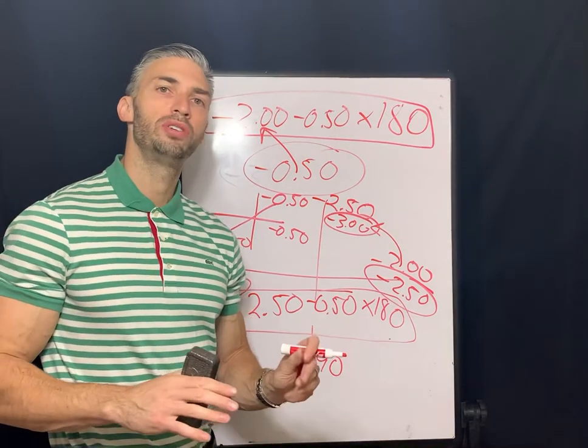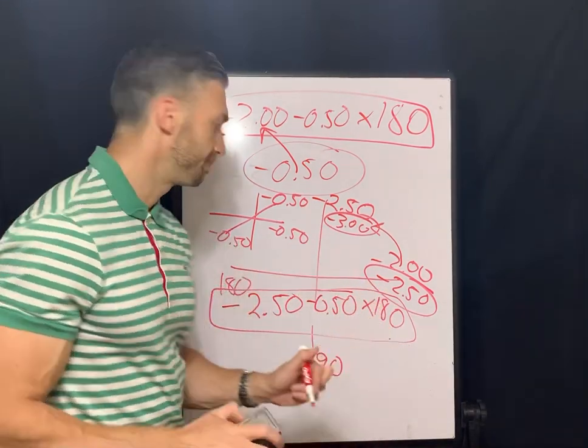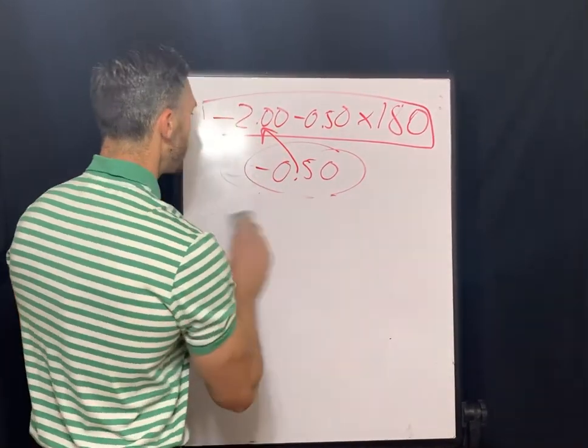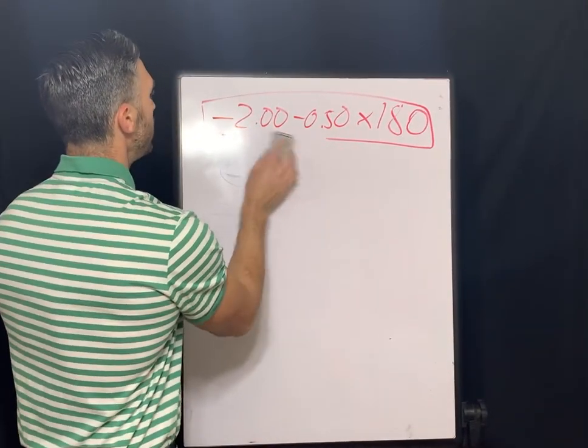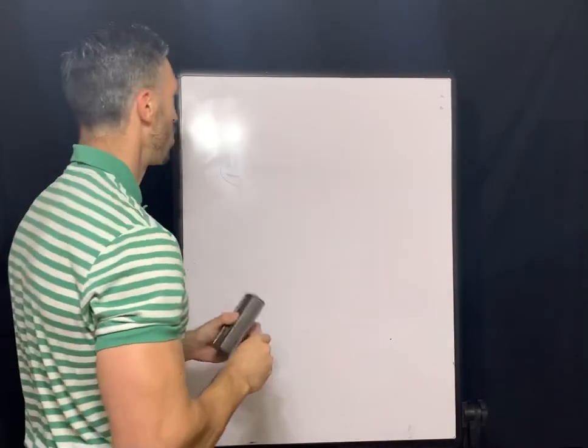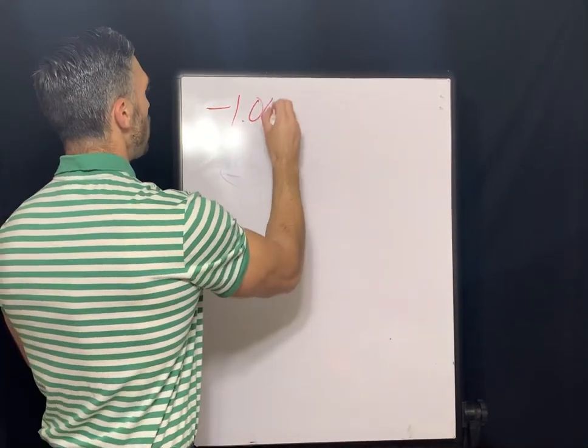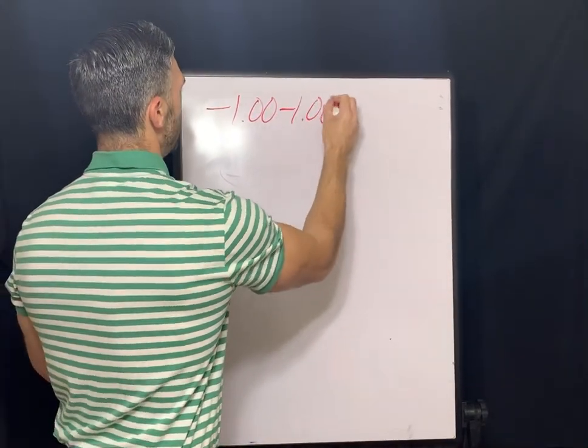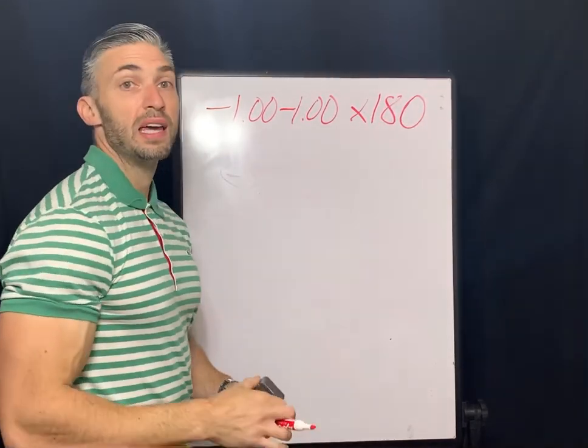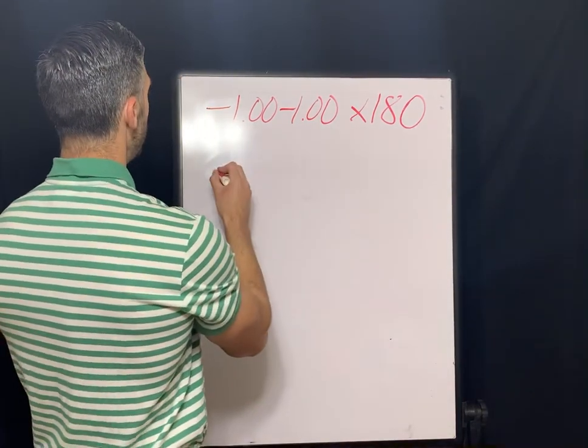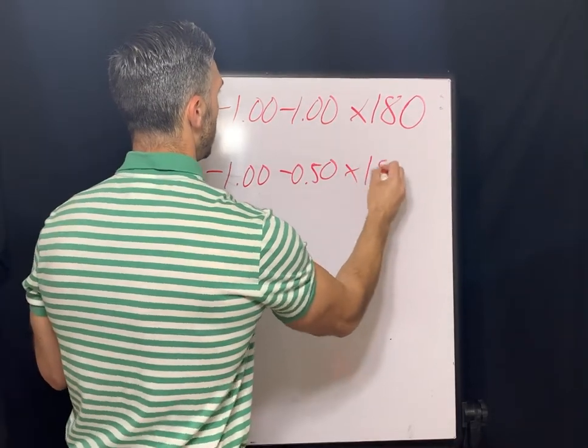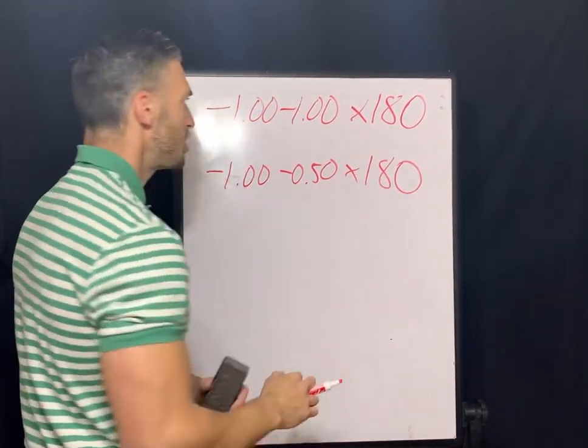So now I want to do a sphero-cylindrical over-refraction. These are not complicated, but you do definitely want to take your time and follow the steps with the optical cross. Let's just say negative one, negative one, axis 180 is the prescribed contact lens. Let's say they're over-refracting at a negative one, negative a half, axis 180.